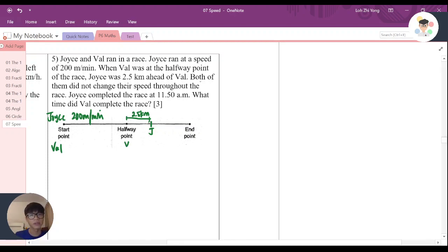Now interestingly, both of them did not change their speed throughout the race. Joyce completed the race at 11:50 a.m. What time did Val complete the race?